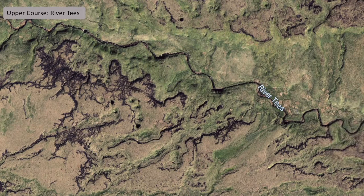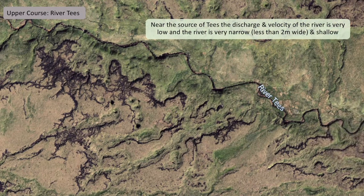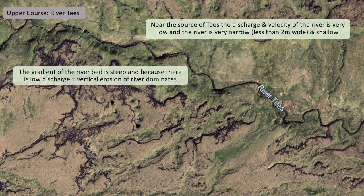This is an aerial shot near the source of the River Tees, and we can see the characteristics of the river just from looking at it. There isn't a lot of discharge, which means the velocity is also very low. At this point the river is very narrow — less than two metres wide — and very shallow. In this mountainous area the gradient of the riverbed is very steep, and because of that, along with the low discharge, the only dominant type of erosion here is vertical erosion, so the river has the energy to erode downwards only.